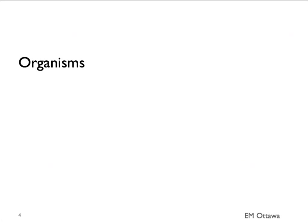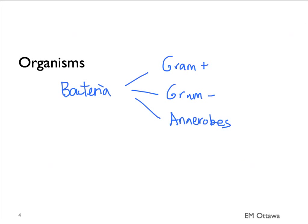Knowing both the patient and the setting will help us decipher which organisms are involved in causing their pneumonia. The categories of organisms include bacteria — they can be gram-positive, gram-negative, or anaerobes — as well as viruses, and rarely fungi. We will focus our discussion mostly on bacterial and viral pneumonia.